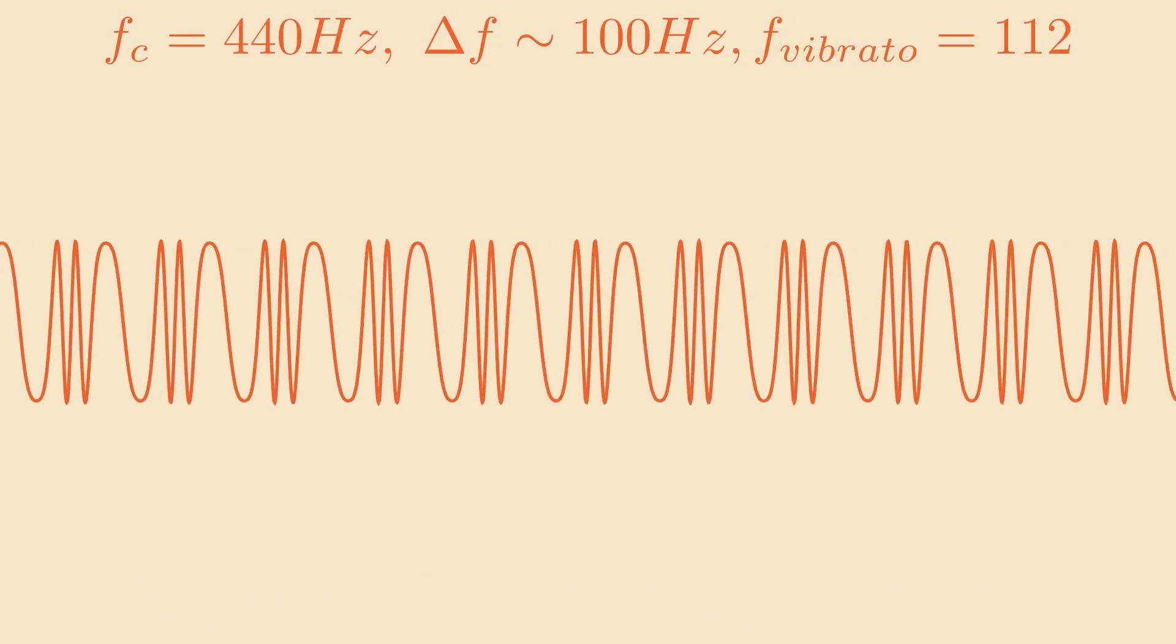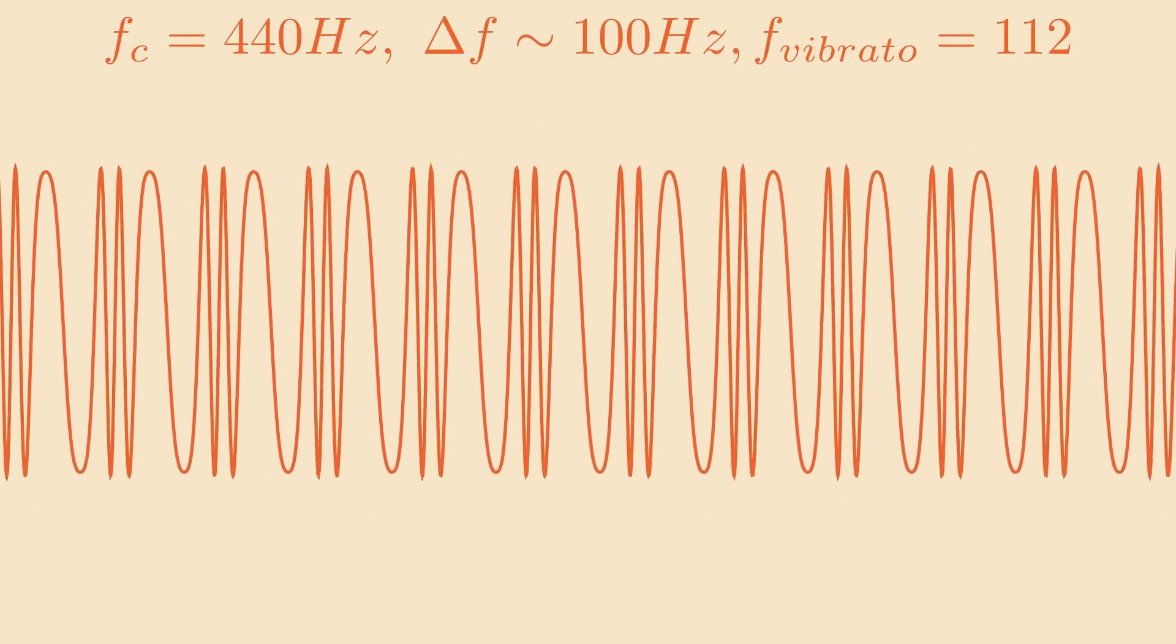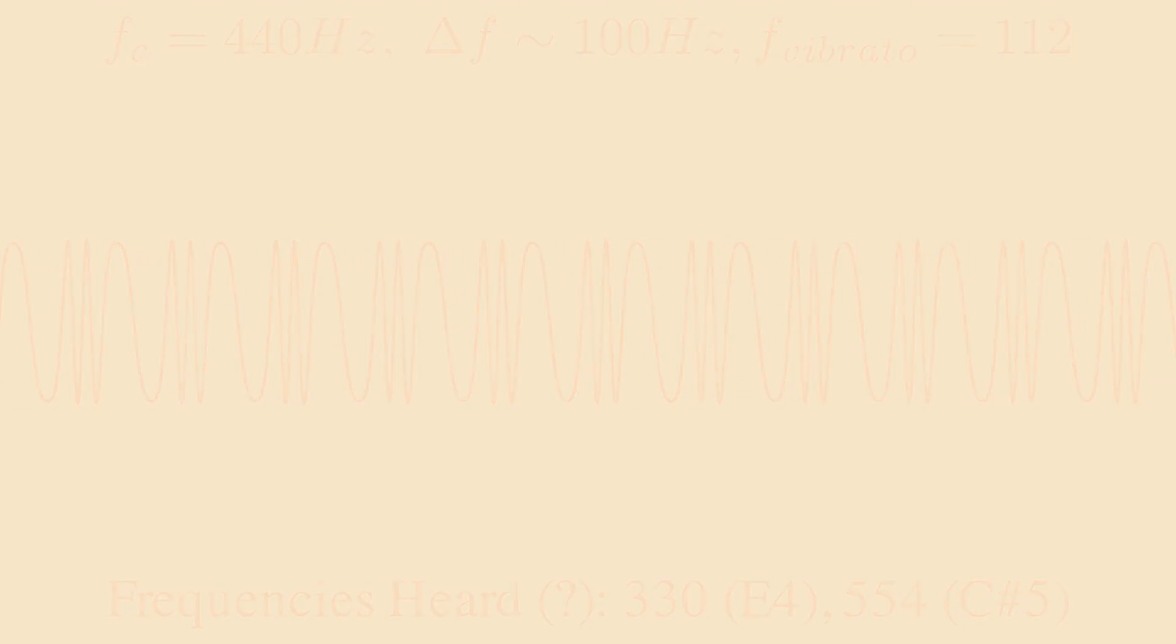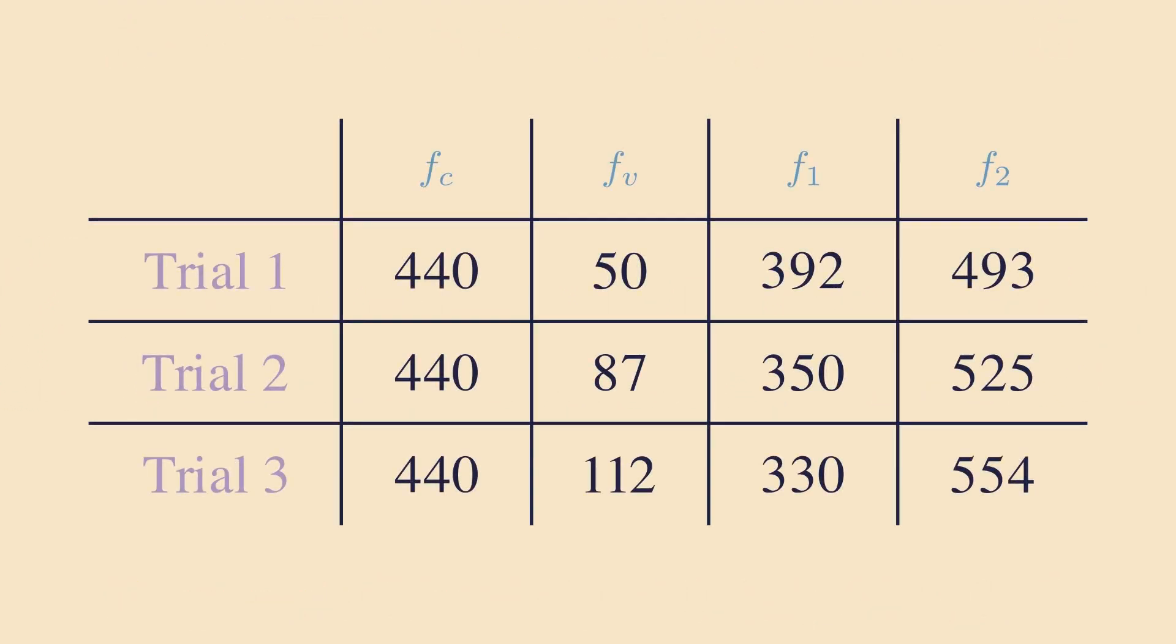At 212 Hz, you might hear an E and a C sharp. Looking at the frequencies of these notes, we see a pattern might be emerging. The notes seem to be a frequency of vibrato away from the main note. For example,